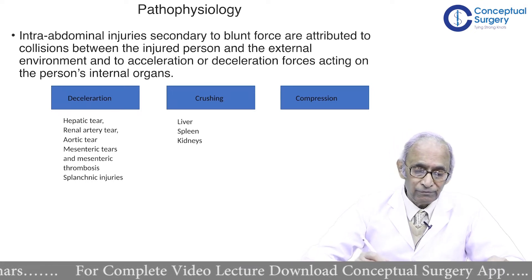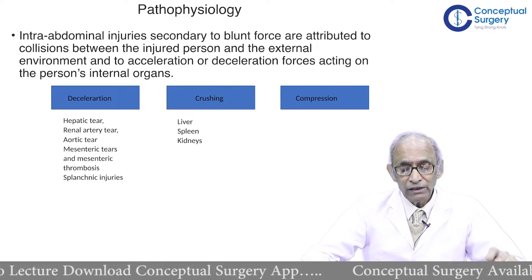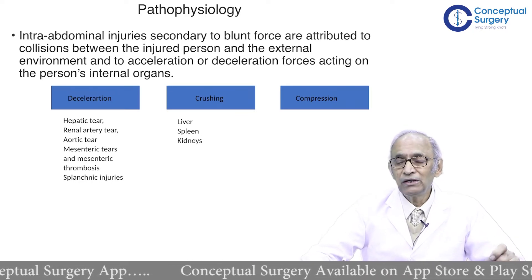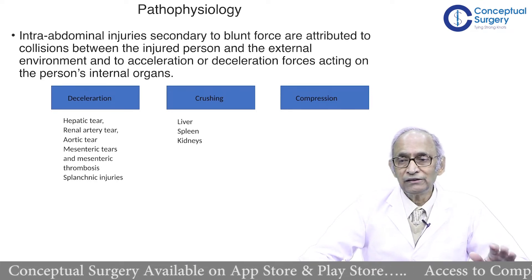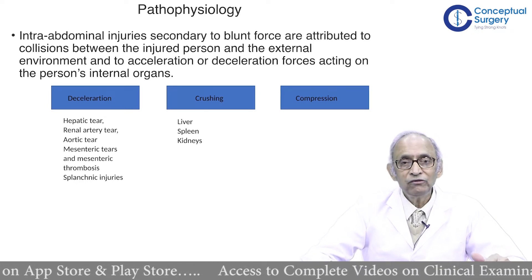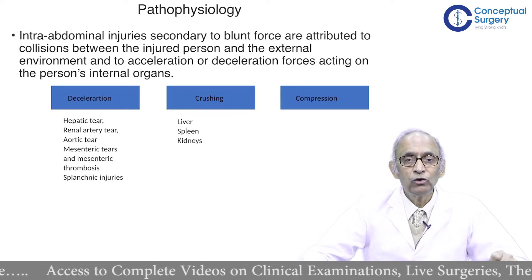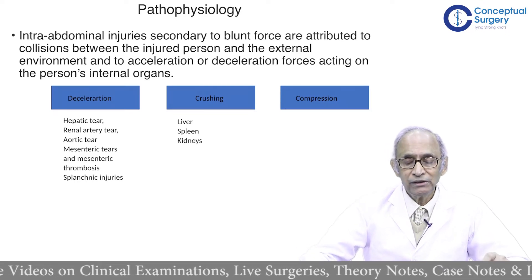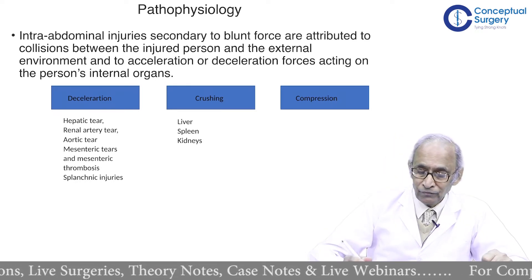Let's look at the pathophysiology — how does the injury actually take place? Intra-abdominal injuries secondary to blunt force are generally because of vehicular accidents. A fast vehicle moving at a certain speed suddenly slows down. The body will be thrown forward, and this same motion will happen to the organs. When the body becomes stationary, the organs will be thrown backward as well.